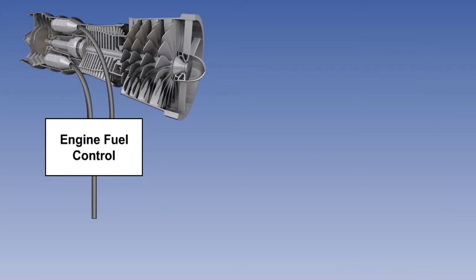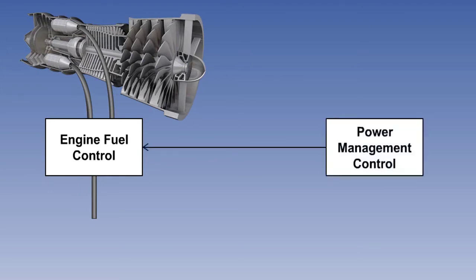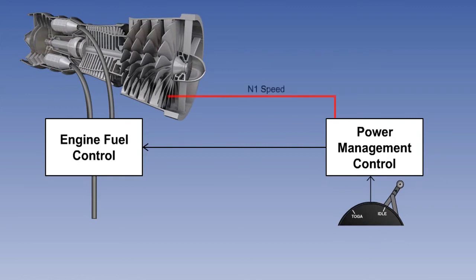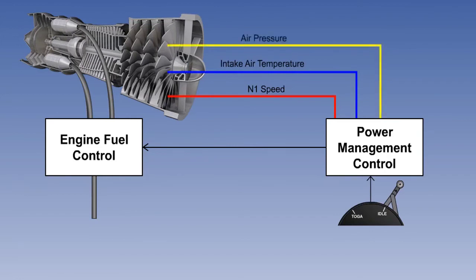With older generation aeroplanes, the engine fuel system supply would be controlled by a hydromechanical engine fuel control unit. More modern aeroplanes allow for electronic refinement of the fuel supply with the power management control unit. There is one unit per engine and they have limited authority over the engine fuel control unit. When the power management control unit is turned on, it allows fine adjustment of the fuel flow to maintain the desired thrust setting. It achieves this by using the thrust lever angle, N1 speed, intake air temperature and pressure to maintain the desired N1 speed.